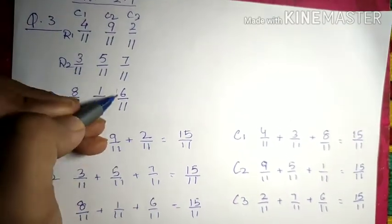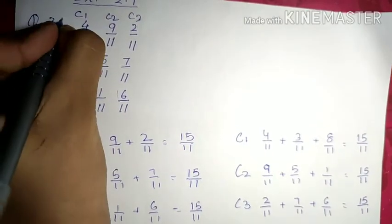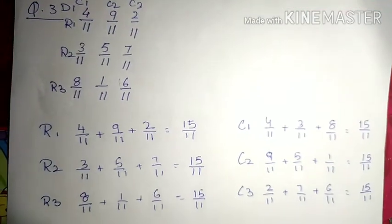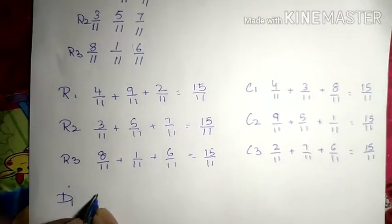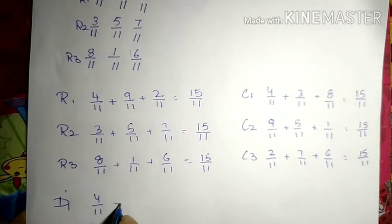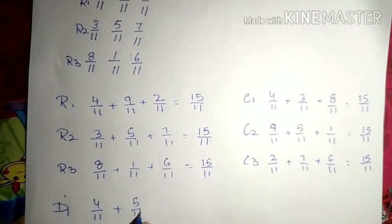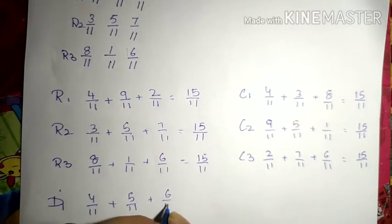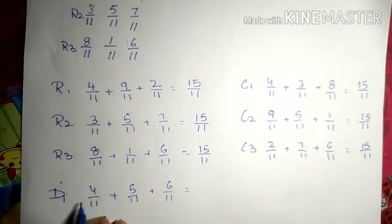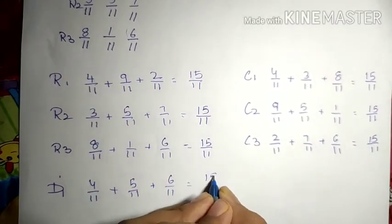Now let's find diagonal. So diagonal is this one. This is diagonal 1. Diagonal 1 is 4/11 plus 5/11 plus 6/11. So 6 plus 4 is 10, 10 plus 5 is 15/11.